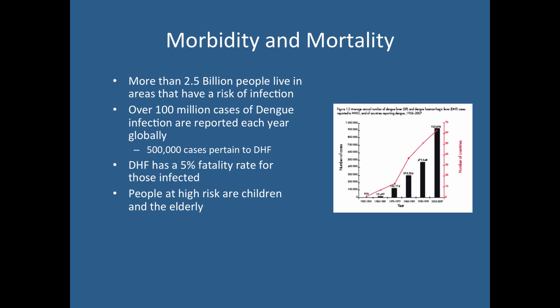Interestingly, the elderly being at risk is generally not something seen with the other NTDs we've discussed. The figure on screen shows the average number of dengue cases per year reported by WHO between 1955 and 2007. That number is still going up — it's plateauing somewhat, but because of population increases the absolute number continues to rise.